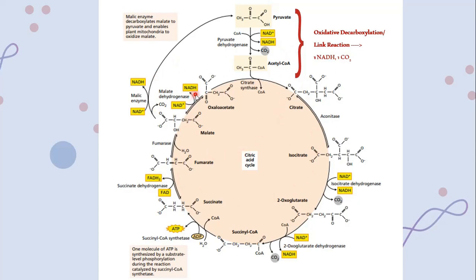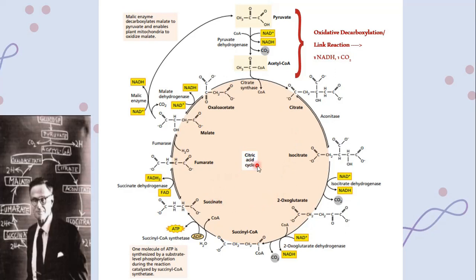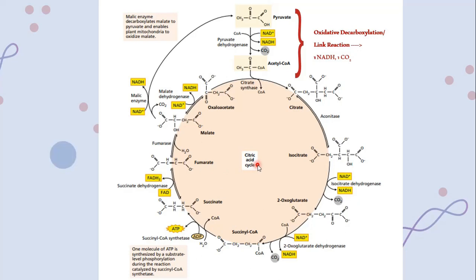This is the whole process of the Krebs cycle, also called the citric acid cycle or the tricarboxylic acid cycle (TCA cycle). The Krebs cycle was named after the British biochemist Hans Krebs, who first identified this reaction cycle in 1937 and was awarded the Nobel Prize in Physiology and Medicine in 1953.